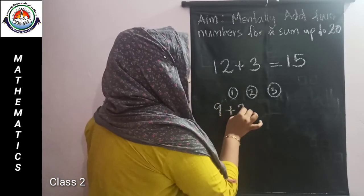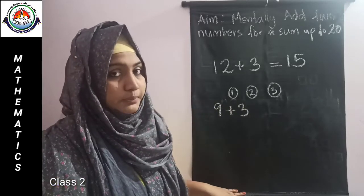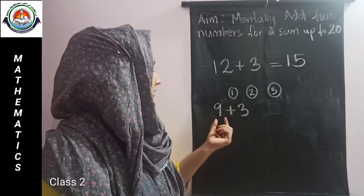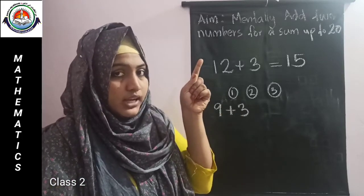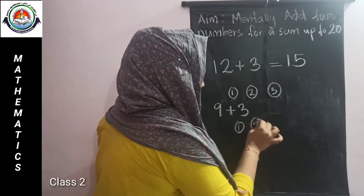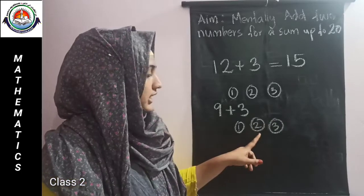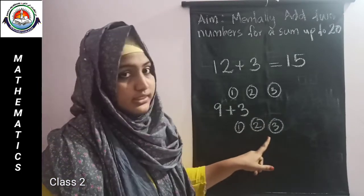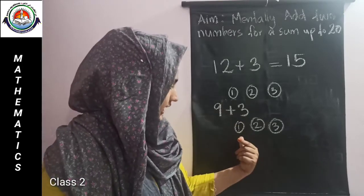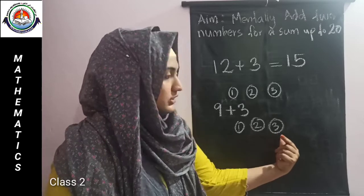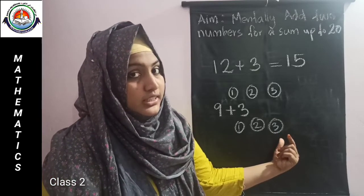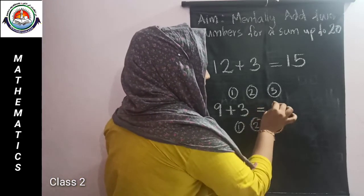9 plus 3. Which is the bigger number here? 9. Very good. So think about the number 9. Then count on as many as the smaller number, which is 3. After 9: 10, 11, 12. Which is the last number we got? Number 12. So we got the sum 12.